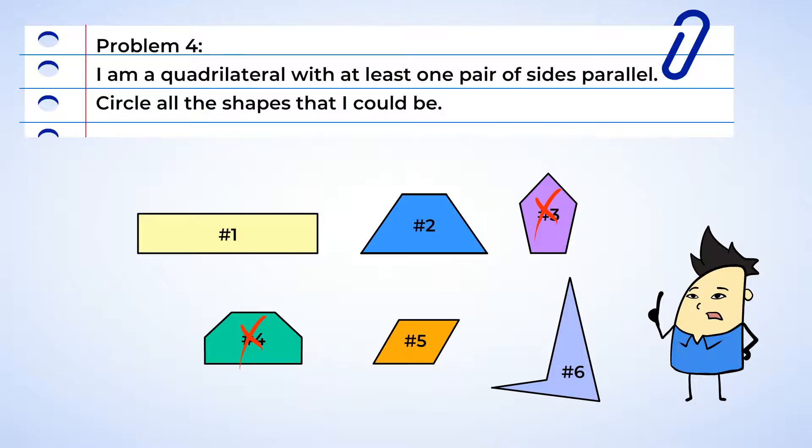The next clue says it has at least one pair of sides parallel. Well, if we extend both pairs of opposite sides of shape number 1, they won't ever cross each other. Hey, this shape fits the riddle. Let's circle it.